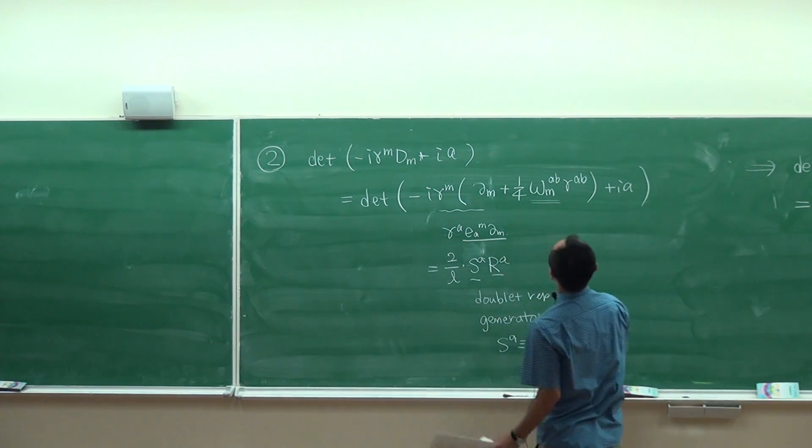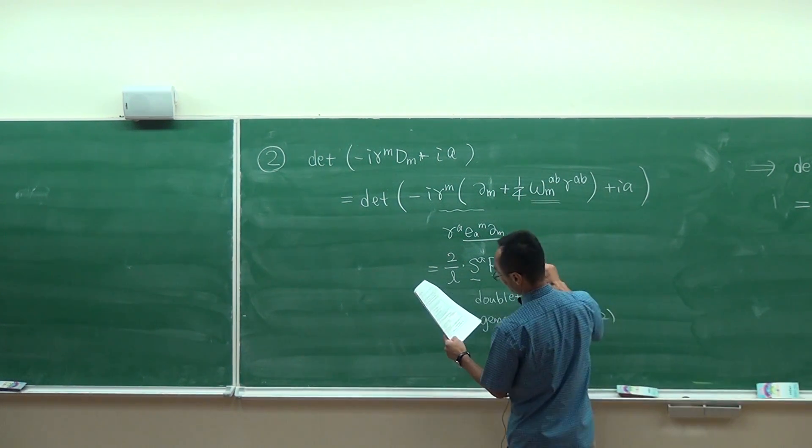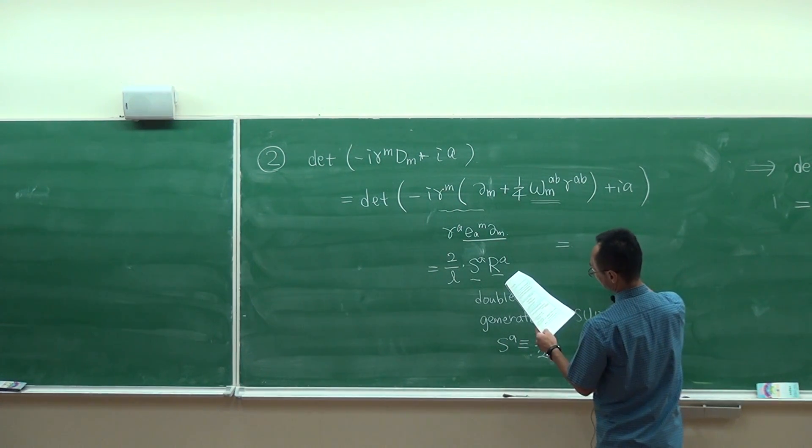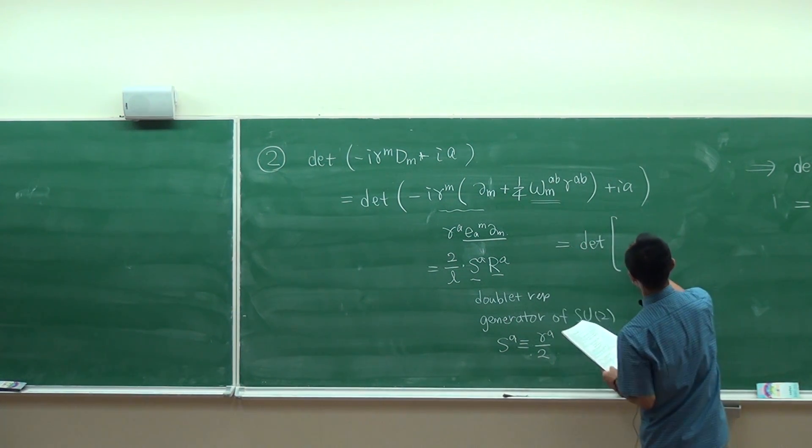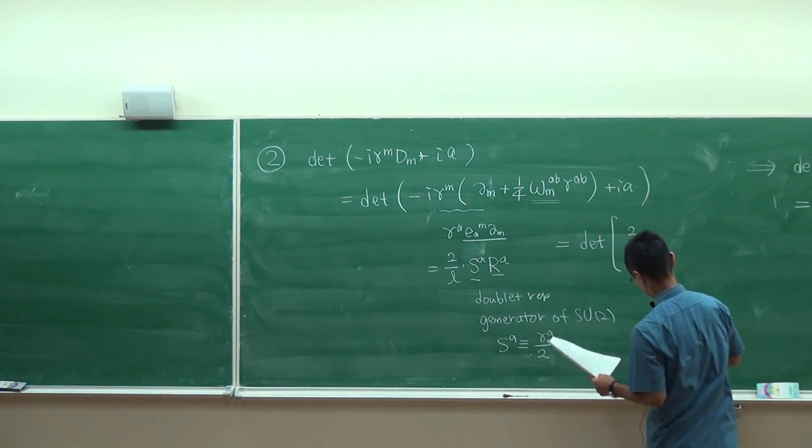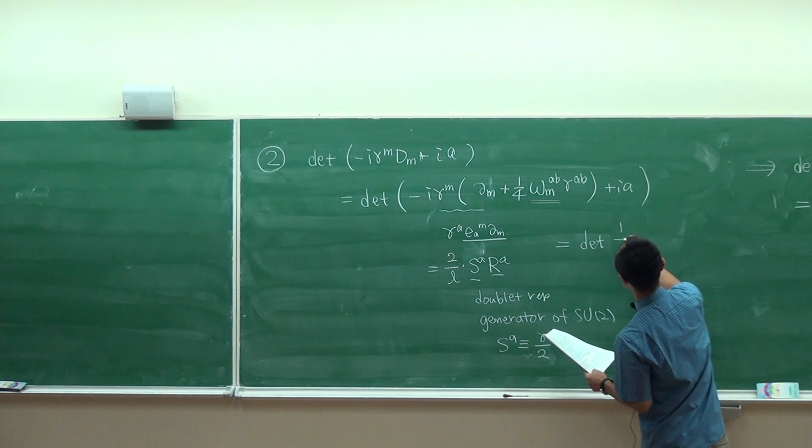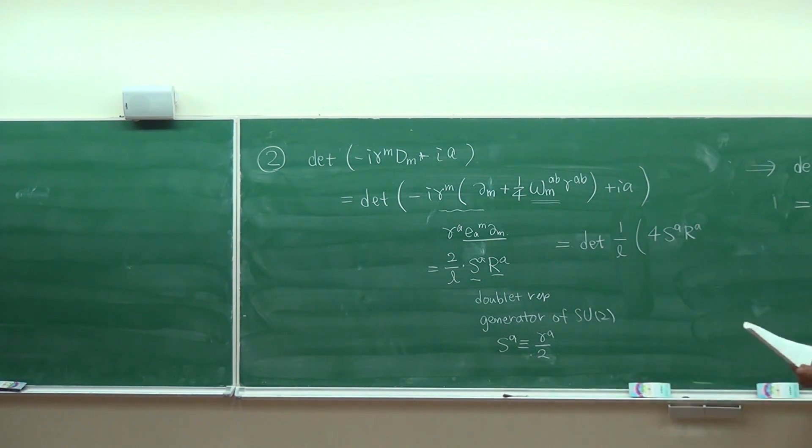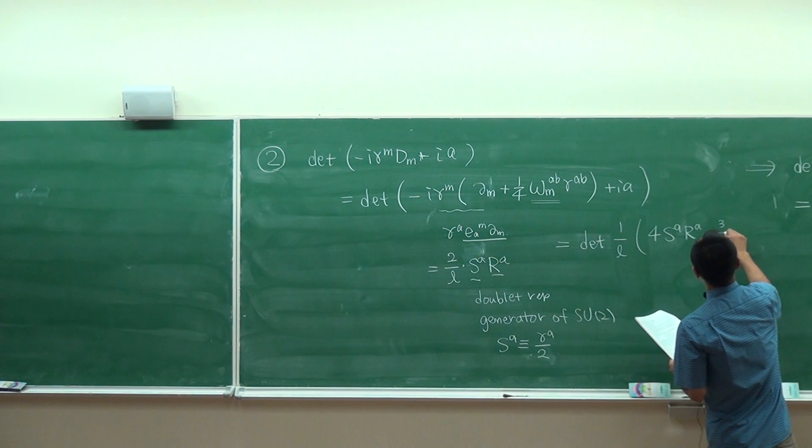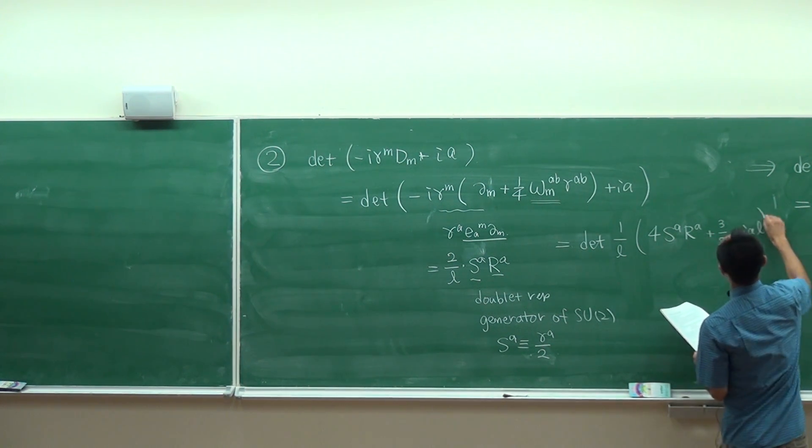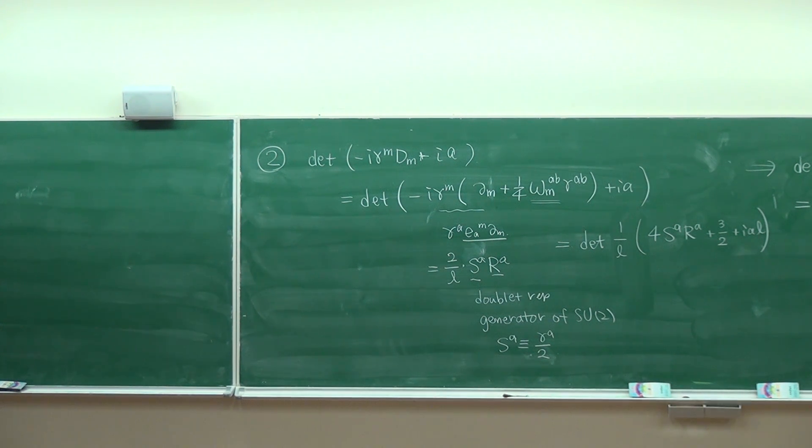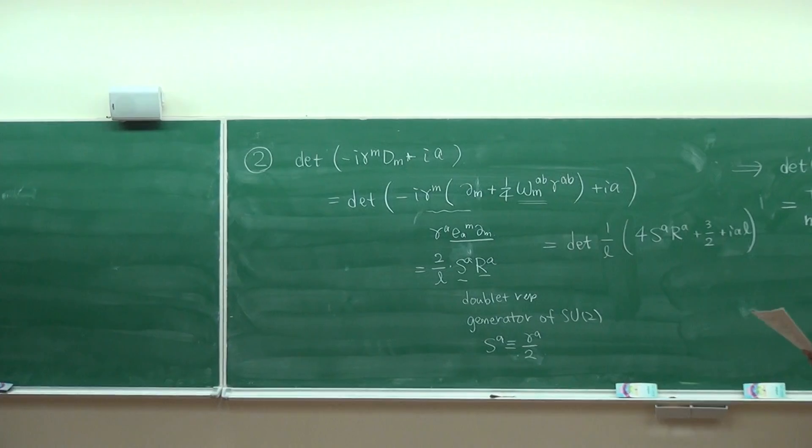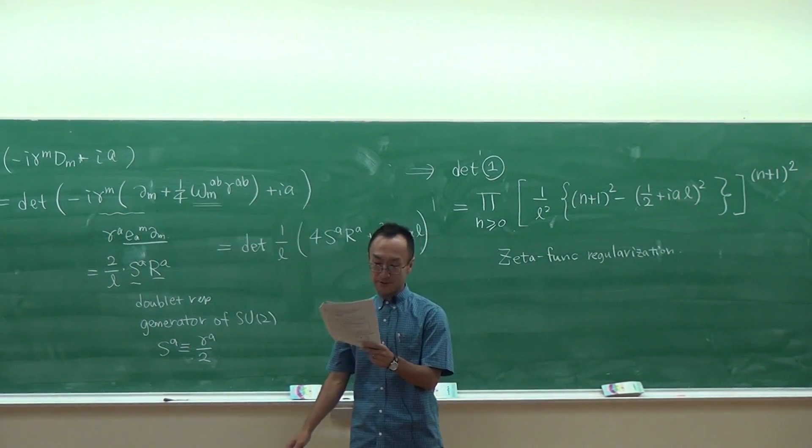I have given you an explicit form for the spin connection. If I use this, the whole thing becomes, after some computation, the whole thing becomes this. The first term comes from this and the second term comes from this term, evaluating the spin connection.